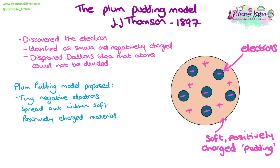The plum pudding model builds on John Dalton's billiard ball model. Some themes are the same through both models where evidence hasn't allowed them to be updated. However, some themes are changed completely, because new evidence has been provided, new experiments have been run, and this has provided new information in order to update the model.